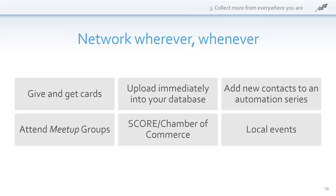Add new contacts to an automation series. With Constant Contact, you have automation where you can send automated emails — autoresponders, another industry term for that. Maybe you want a series of emails. I have a free series on my website: six tips for getting started with online marketing. I created it once, and people on my email list get those emails in that series. Local events — network, network, network. That's what business is all about. I'm very heavily involved in networking here in the Dayton area, and it's a great way to meet people, get referral partners, and grow your list.